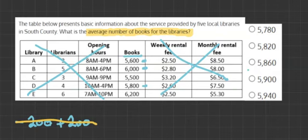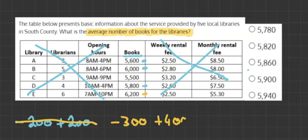So we can ignore that. Moving on to 5,500, we see it's 300 less than 5,800, so we write minus 300. The last number, 6,200, is 400 more than 5,800, so we add plus 400. When we do minus 300 plus 400, we're left with plus 100. This is the difference.